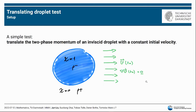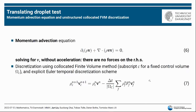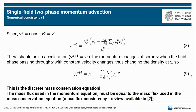The discontinuity of densities and the interface-affected surface tension cause critical issues when numerically solving the momentum equation. Here is a simple case: an inviscid droplet translates with the ambient flow, given a constant initial velocity. We ignore the force terms on the right-hand side of the momentum equation, giving us a pure momentum advection equation. Discretizing this using a collocated finite volume method and explicit Euler temporal scheme gives us equation seven.